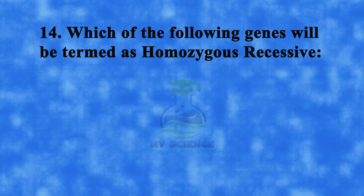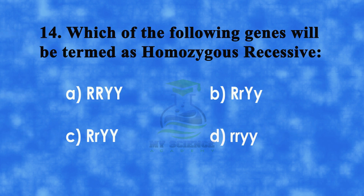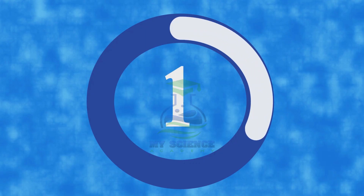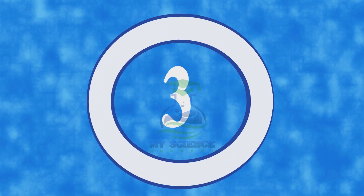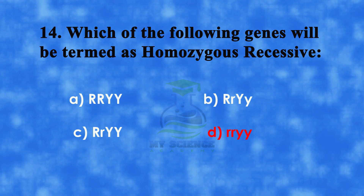Question 14: Which of the following genes will be termed as homozygous? A. Capital R, Capital Y pair; B. Capital R, small r, Capital Y, small y; C. Capital R, small y, Capital Y pair; or D. small r, small y pair. Correct answer is D. small r, small y pair.